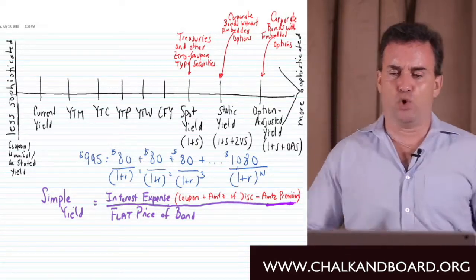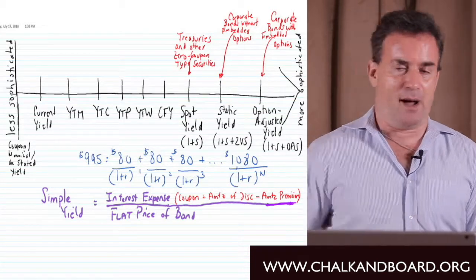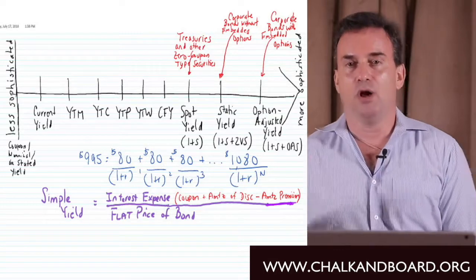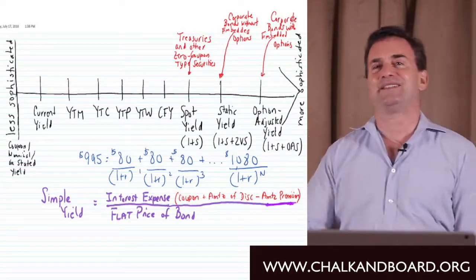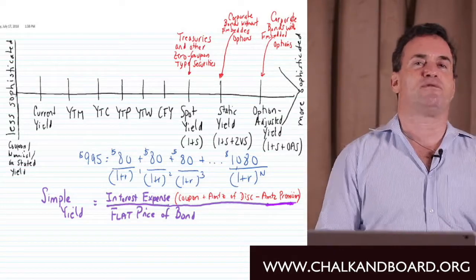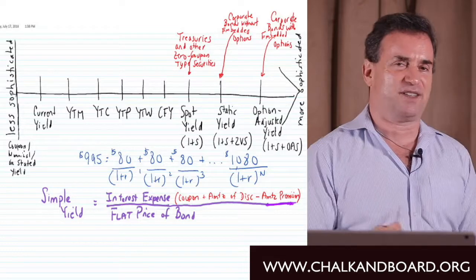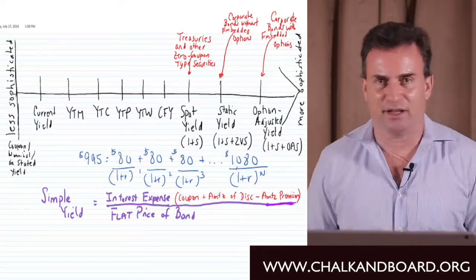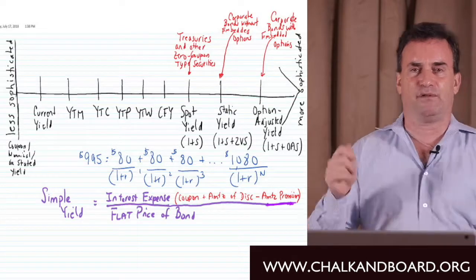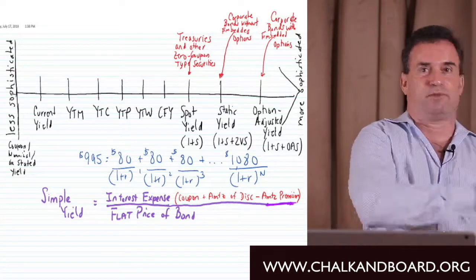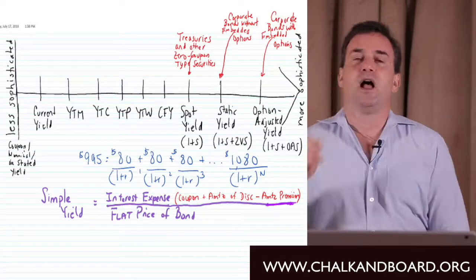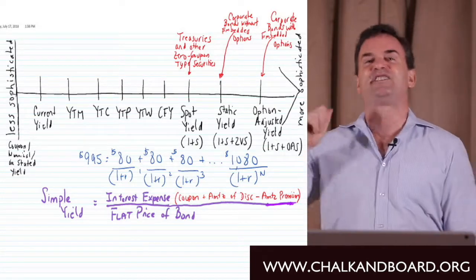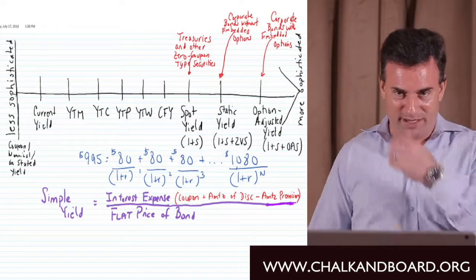This is applicable to corporate bonds that have no embedded options — in other words, option-free bonds, non-putable, non-callable. What is a Z-spread, a zero volatility spread, or a static spread? I'll stick to the terminology of the zero volatility spread. Also known as the Z-spread or the static spread.